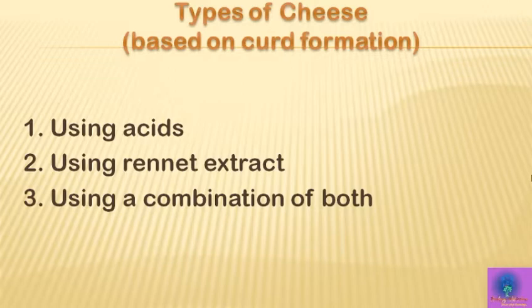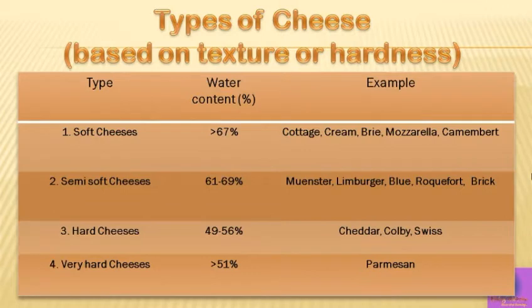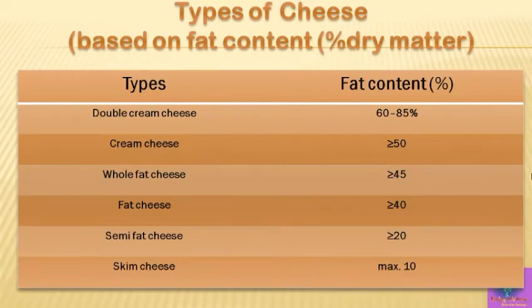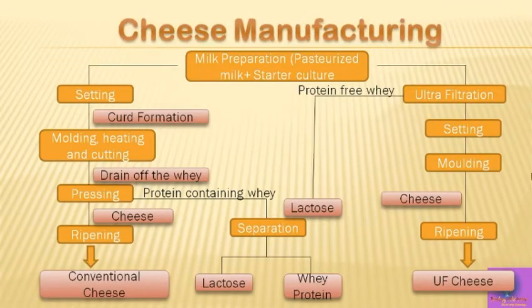Rennet is now also produced by genetically engineered microorganisms. Cheese is further classified on the basis of texture, hardness, or water content — soft, semi-soft, hard, and very hard cheese — and based on fat percentage: double cream, cream, whole fat, fat, semi-fat, and skim cheese. Cheese manufacturing specially consists of curd formation and ripening, and all cheeses result from a lactic acid fermentation of milk, causing coagulation of milk proteins and curd formation.